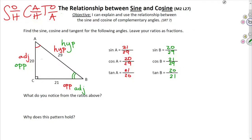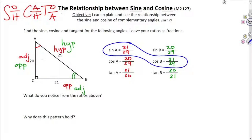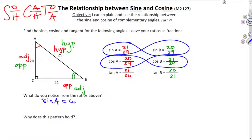The cosine of angle B is 21 over 29. And the tangent of B is the opposite over the adjacent, or 20 over 21. What do you notice about these ratios? You might notice that the sine of A is the same as the cosine of B — those are both 21 over 29. And the cosine of A is the sine of B — those are both 20 over 29. So the sine of A is equal to the cosine of B, and the cosine of A is equal to the sine of B.